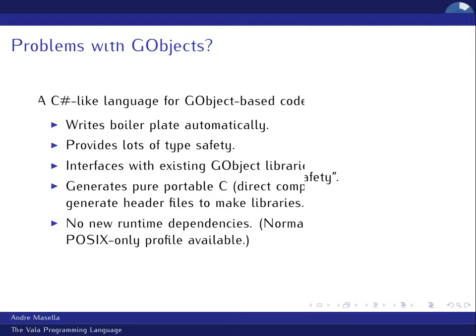What Vala does is provide a C#-like language that's built on using GObjects. You write something that looks like C# or Java code, and it spits out all the GLib/GObject boilerplate to make everything happen in C. It does all the type safety checking that the compiler should be doing. You get to interface with all the GObject libraries, and because they have such strict coding conventions, there are Vala tools that can scan through header files and provide a nice interface automatically from the C code.